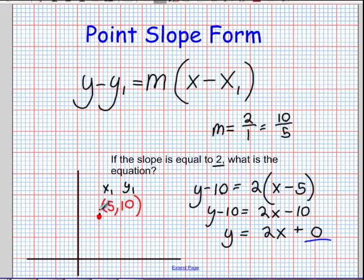So let's look at that. If I rise 10, 1, 2, 3, 4, 5, 6, 7, 8, 9, 10, and run 5, I get a point right there. Let's raise this up a bit.